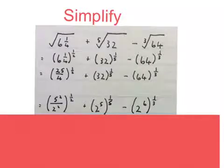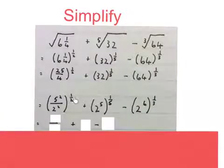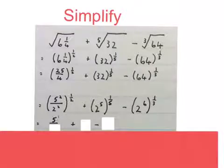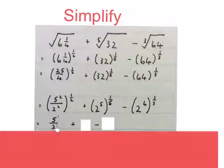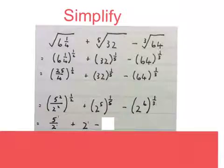Then we use our third exponent law and multiply that half with that small 2 in the exponent, the half with that small 2 in the exponent, the fifth with that 5, and the third you multiply by that 6. If you multiply that half by the small 2 you get 5 to the power of 1. If you multiply that half by that small 2 you get 2 to the power of 1. If you multiply that fifth by the 5 you get 2 to the power of 1. If you multiply that third by the 6 you get 2 to the power of 2.